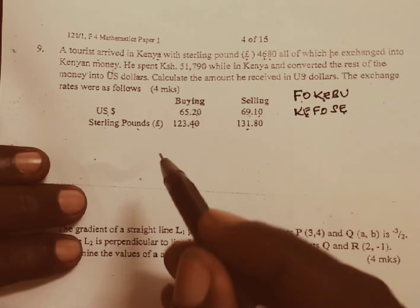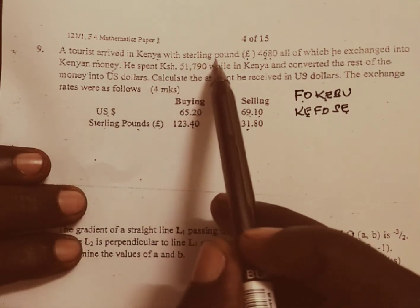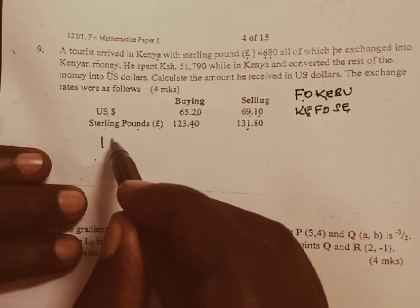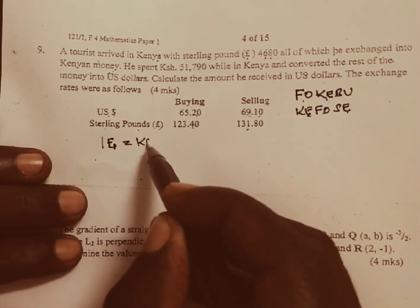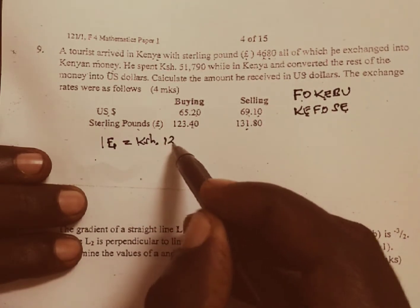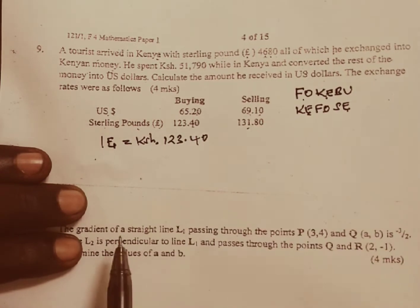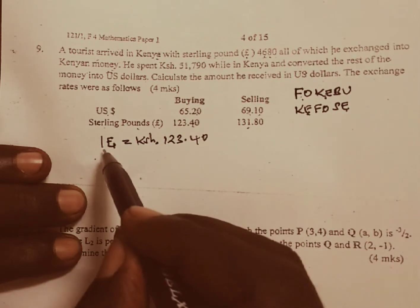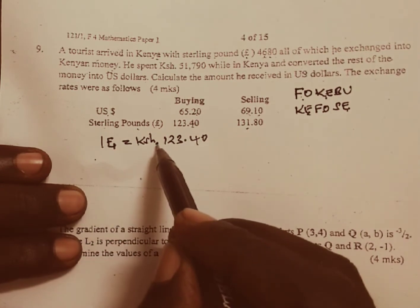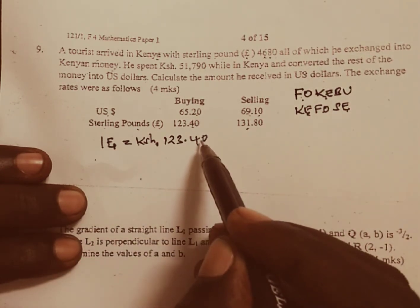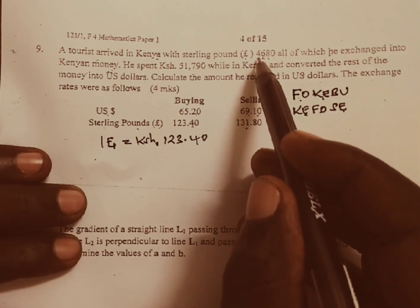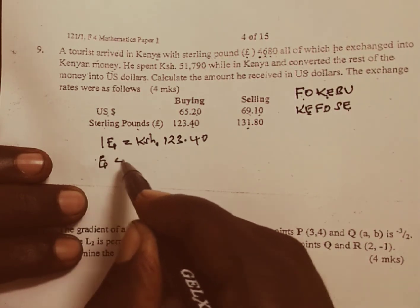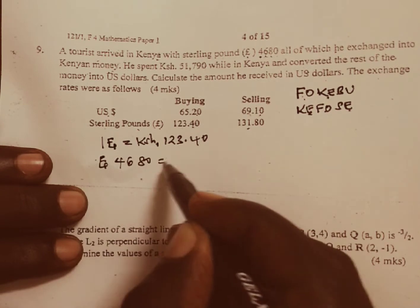So let us go through the question. A tourist arrived in Kenya with these sterling pounds and we know one sterling pound would be equivalent to Kenya shillings 123.40 cents because from foreign to Kenya we use buying. So if one sterling pound is equivalent to Kenya shillings 123.40 cents, what about the amount he came with? That is what about pounds?